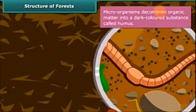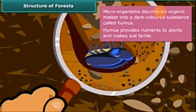The forest floor also contains microorganisms like fungi and bacteria. You can see the leaves, branches, and insects in the soil, but the microorganisms are so minute that we cannot see them with our naked eyes. Microorganisms decompose organic matter into a dark color substance called humus. This humus provides nutrients to plants and makes the soil fertile.